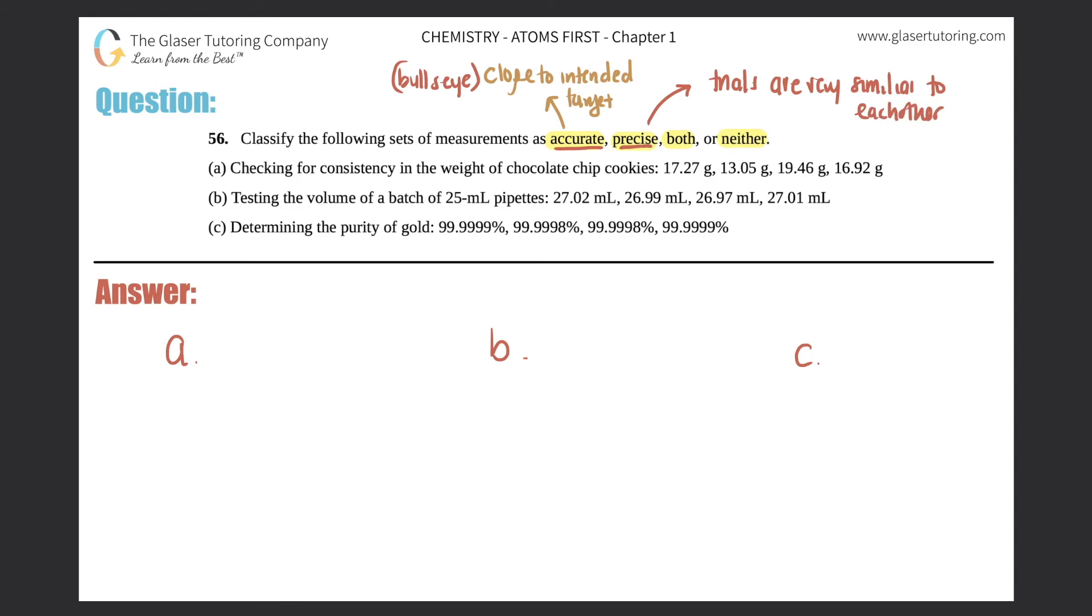Another way of saying this is that it is very similar to the average amount. If you took an average, all of your trials should be close to that average.